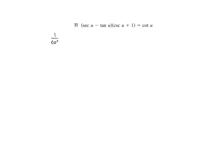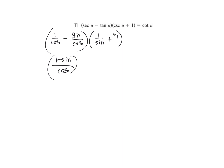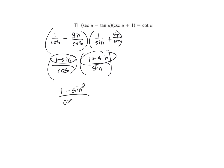Secant is 1 over cosine, tangent is sine over cosine, and cosecant is 1 over sine plus 1. On the left, put the two terms together: 1 minus sine all over cosine. Get a common denominator with sine over sine — that's 1. So 1 plus sine on top all over cosine, all over sine. Keep change flip. On the top, this is the difference of squares: 1 minus sine squared all over cosine sine. 1 minus sine squared is cosine squared, which reduces with one cosine in the denominator, leaving cosine over sine, which is cotangent.